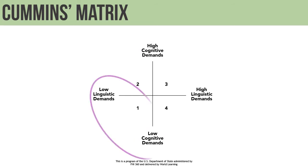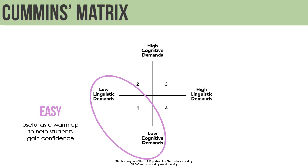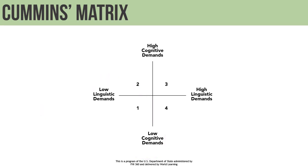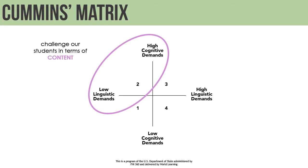Items in quadrant 1 are easy both in terms of linguistic or language demands and cognitive or content demands. For testing purposes, these might be useful as a warm-up to help students gain confidence. When we are focused primarily on testing content, we will want to have most of our items belonging to quadrant 2. That is, we want to challenge our students in terms of the content without making the linguistic demands too high.